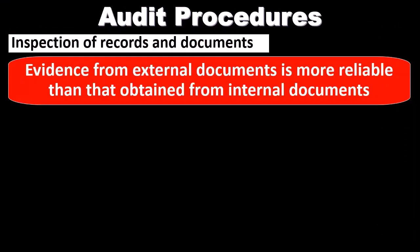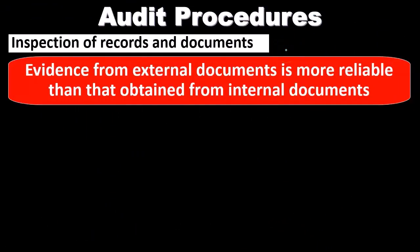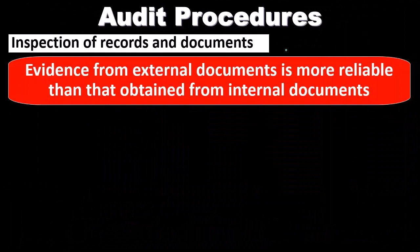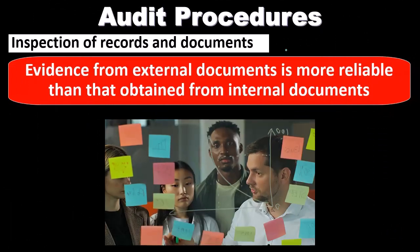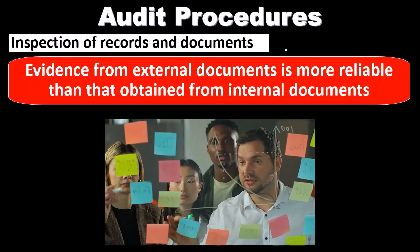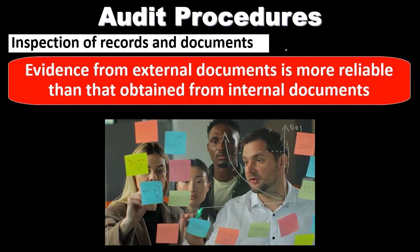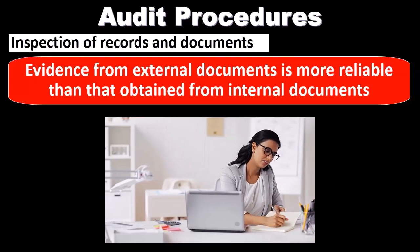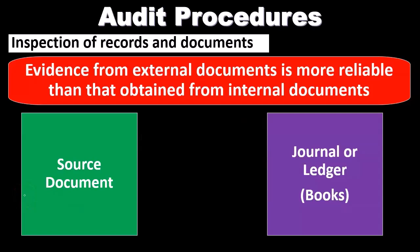Another audit procedure is the inspection of records and documents. Evidence from external documents is more reliable than that obtained from internal documents. When going through documentation as part of our evidence, documentation from external sources is more valuable than from internal sources — just like a detective would find third-party information more credible. A third party not related to the company provides more valuable documentation because if management wanted to deceive us, it would be easier with internal documentation. We always maintain a level of skepticism as the auditor.